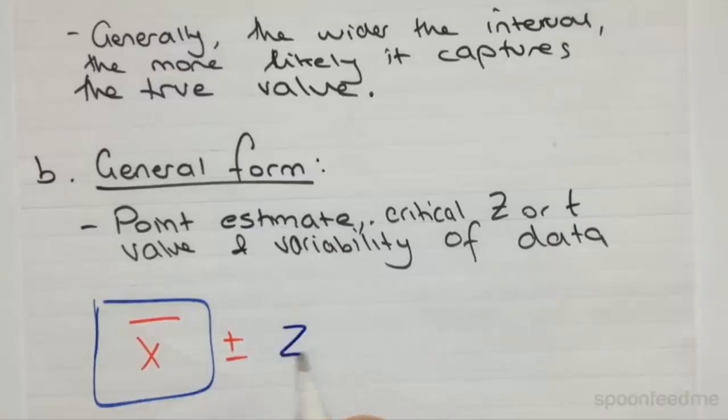And what that's built around is the critical Z value. So that is the Z value that bounds the confidence interval in a normal distribution.